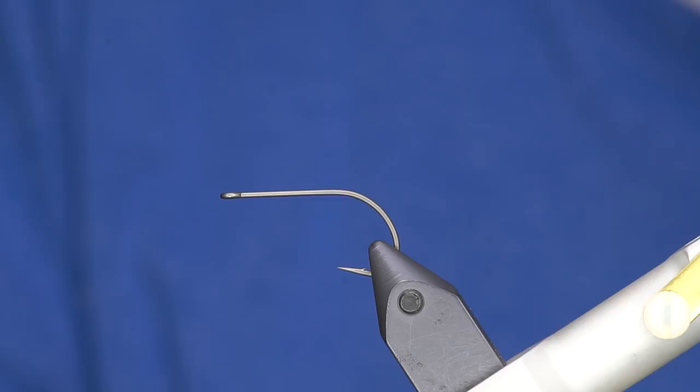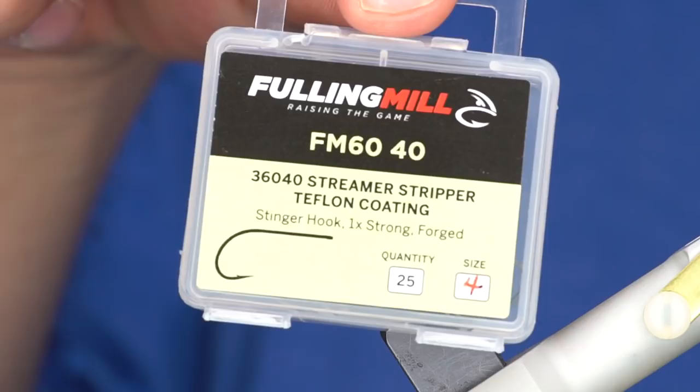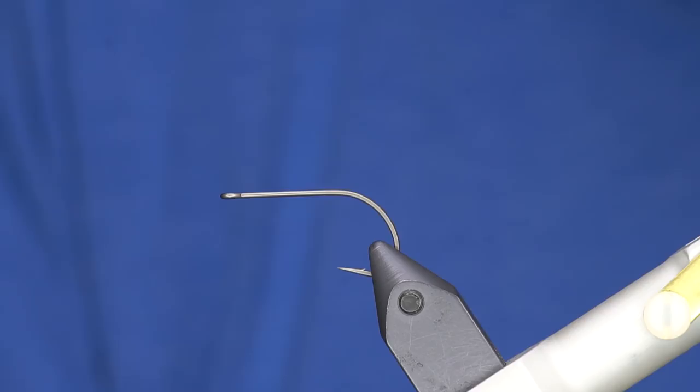I started working on a very small version of that same type of fly, so this fly's called the Mini McMouse Face. One thing you'll see is it's only a single hook fly - this is a size 4 streamer stripper hook from Fulling Mill. These are the absolute business for streamers or big flies. The Teflon coating really makes it easy to penetrate.